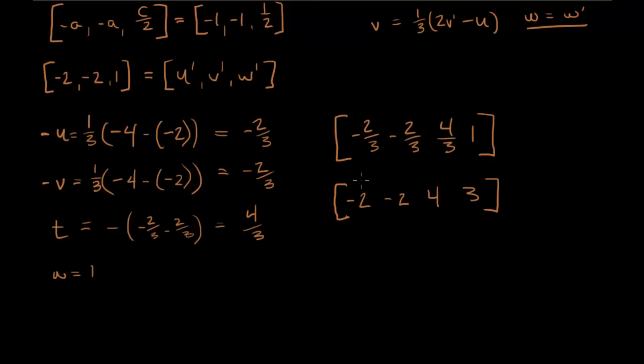But we're not done yet because remember that to put this in its correct form, negative values just have a bar over them. So 2 bar, 2 bar, 4, 3. And that's our answer.